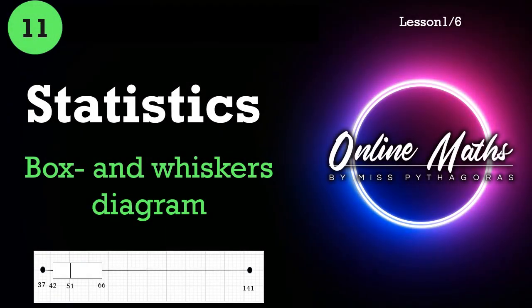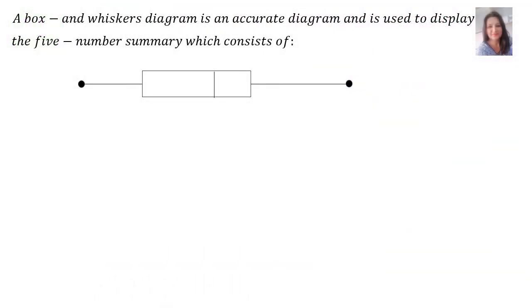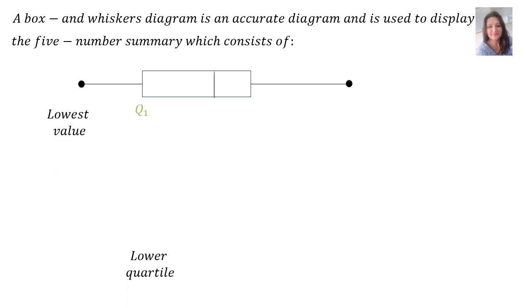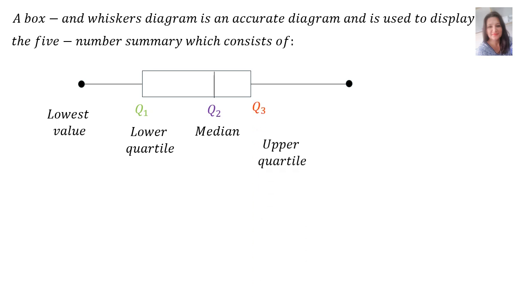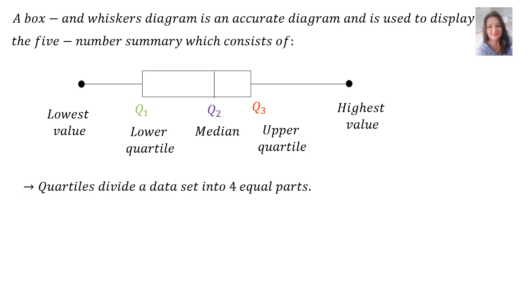Hello everybody. In this lesson I will discuss box and whiskers diagrams, skewed and symmetrical data, as well as quartiles. In statistics, a box and whiskers diagram is an accurate diagram used to display the five number summary, which consists of the lowest value, Q1 (the lower quartile), Q2 (the median), Q3 (the upper quartile), and the highest value. Quartiles divide a data set into four equal parts.